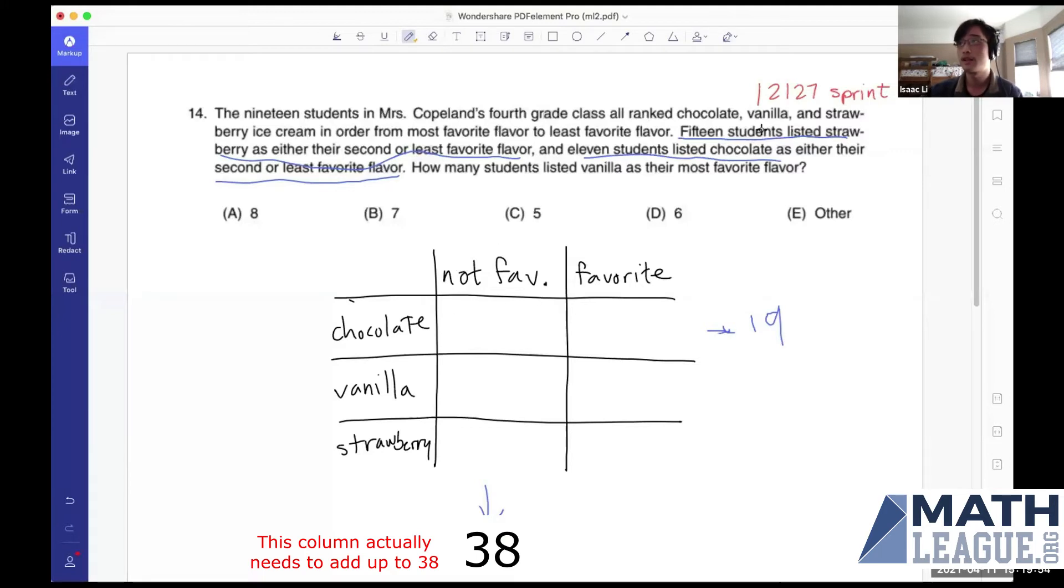So here's what we know so far. We know that this area here, chocolate as not most favorite flavor, is 11. So 11 plus something is 19. So eight students listed chocolate as the favorite.